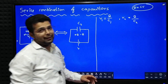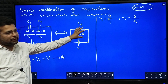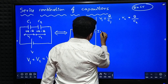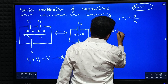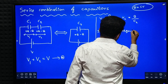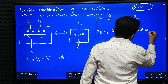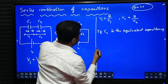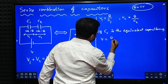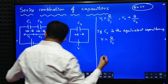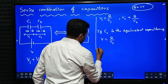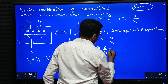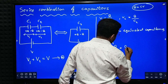Now we are going to replace this system of capacitors into an equivalent capacitance, which I call Cs. If Cs is the equivalent capacitance, then V is equal to Q by Cs. Now I have the values of V, V1, and V2. Substituting in equation star: Q by Cs is equal to Q by C1 plus Q by C2.